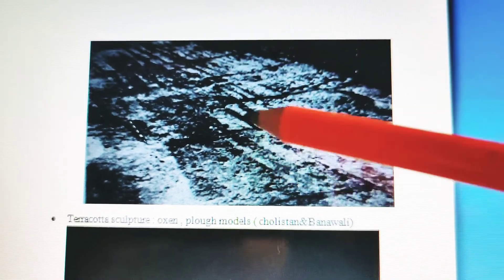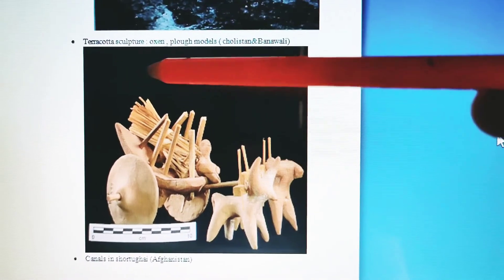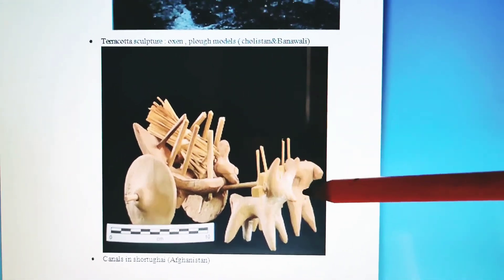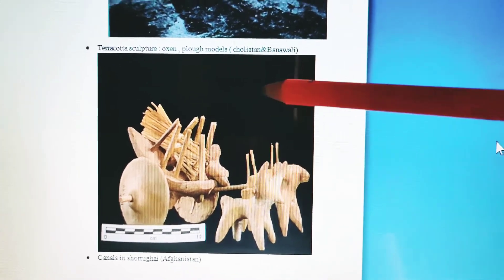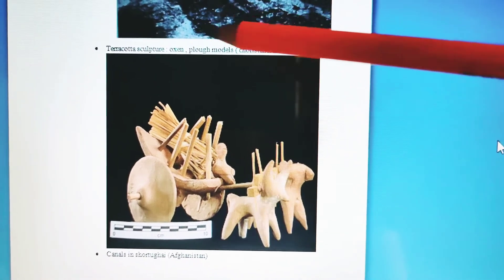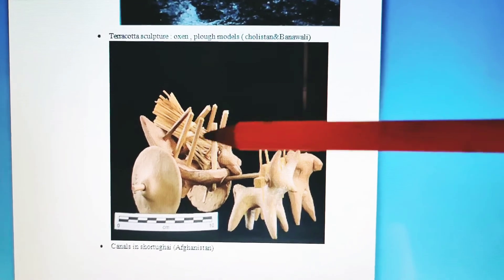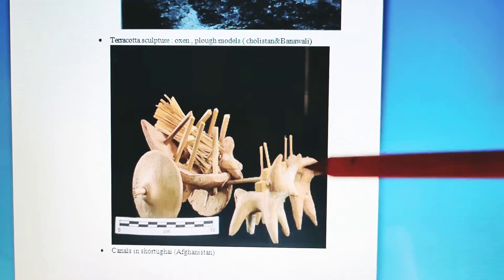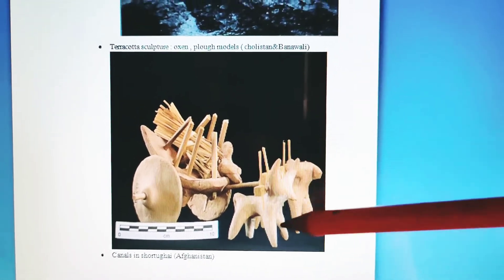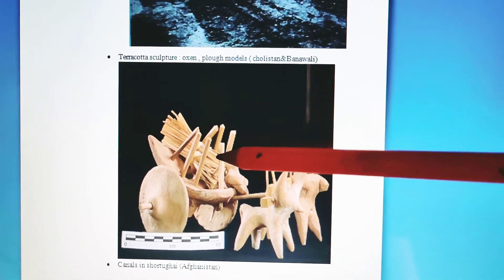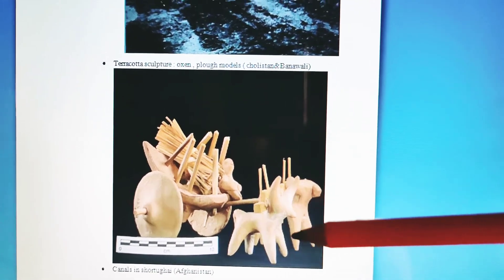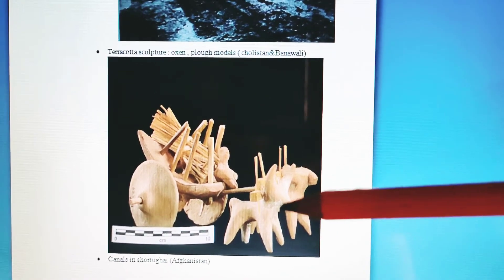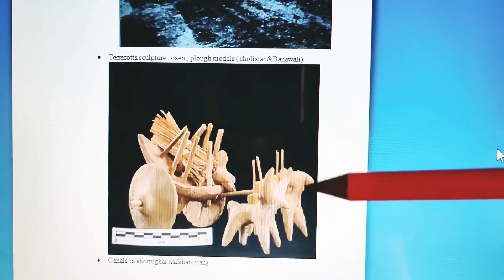The next evidence is a terracotta sculpture in which an oxen was made, and this is a plough. Plough models have also been found from Cholistan, which is part of Afghanistan, and Banavali in Haryana. There is also an oxen toy cart — basically a toy cart — which clearly indicates transportation of hay, possibly as fodder for cattle. This is a clear indication that India's farming tradition is inspired from the Indus Valley, as this same scene is typical in Indian villages today.